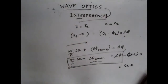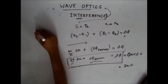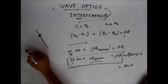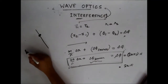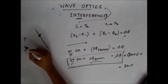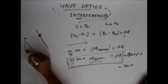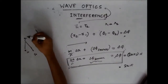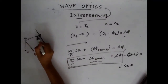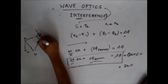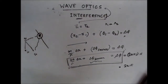Let's first understand why we have a dark band. At a place on the screen where there's a dark band, light from S1 and S2 arrives — remember that S1 and S2 both derive from the same source. Whatever phase changes occur in source S0 are reflected in both sources simultaneously, so the phase difference is maintained constant. By Huygens' principle, both S1 and S2 act as sources and emit waves in all directions, and these waves reach this point.